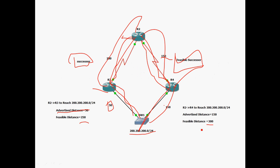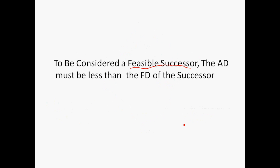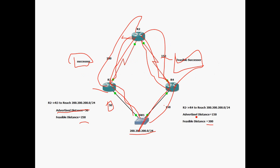For the R2→R4 path to be a feasible successor, its advertised distance (150) must be less than the successor's feasible distance (250). Since 150 is less than 250, R2→R4 is eligible to be a feasible successor.